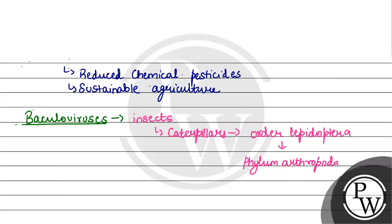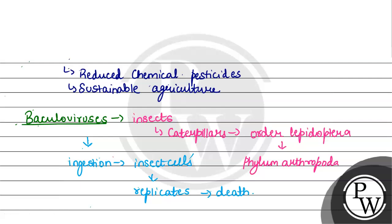After ingestion by the insects, the virus enters the insect cells and replicates inside them. After replication, the insect dies, and this cycle continues.